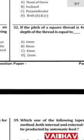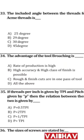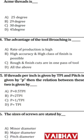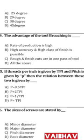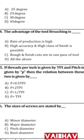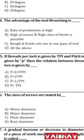Question 33: The included angle between threads for an acme thread is 29 degrees — answer is B — 29 degrees. Question 34: The advantage of tool broaching is — the answer is D — all of the above.